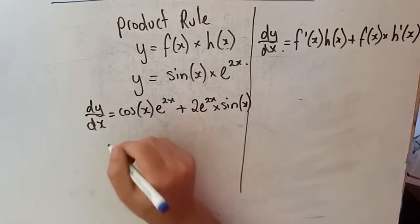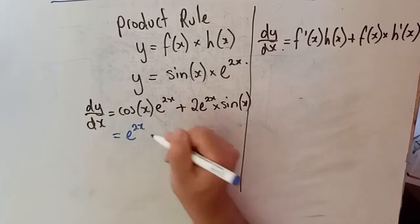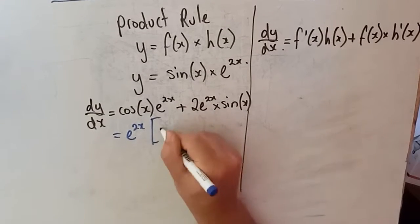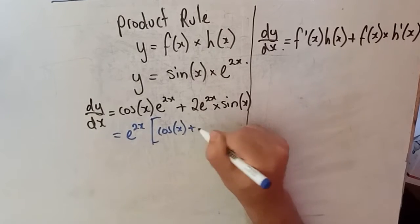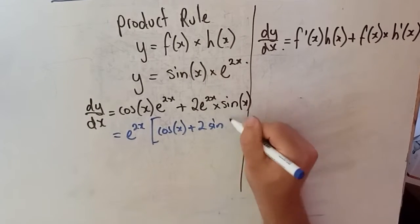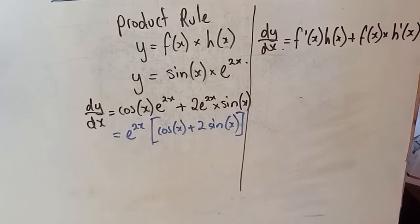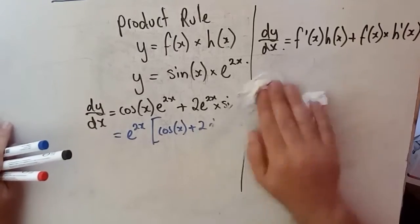You could factor out e to the 2x as a common factor — that leaves cos(x) plus 2 sin(x) — but there's nothing particularly special there. That's about as simple as it can become. Now let's do the quotient rule.